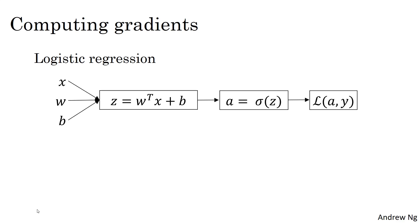Recall that when we talked about logistic regression, we had this forward pass where we compute z, then a, and then the loss. Then to take derivatives, we had this backward pass where we could first compute da, and then go on to compute dz, and then go on to compute dw and db.